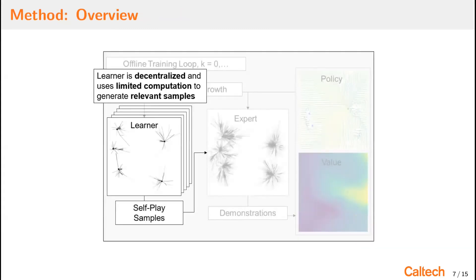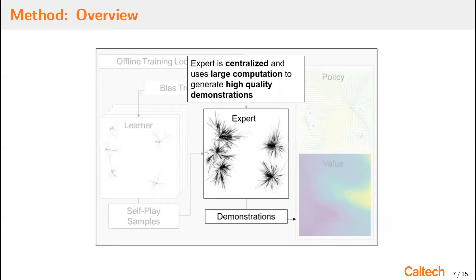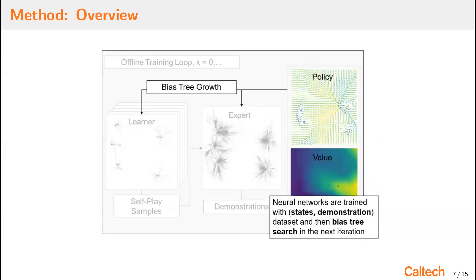In order to bridge the gap between high-performance discrete settings and realistic robotic settings, we introduce two tree search algorithms, the learner and the expert, where each have a unique contribution. At runtime, only the learner will be evaluated, but the expert is needed for the training process. The learner is decentralized and uses limited computational resources. It plays itself to generate relevant state-based samples. Next, the expert, which is centralized and uses a large computational budget. It generates high-quality demonstrations on these samples. Next, the neural networks are trained using the state demonstration dataset, and then they bias the tree search in the next iteration. Iterating over these three steps improves the policy and value network quality over time.